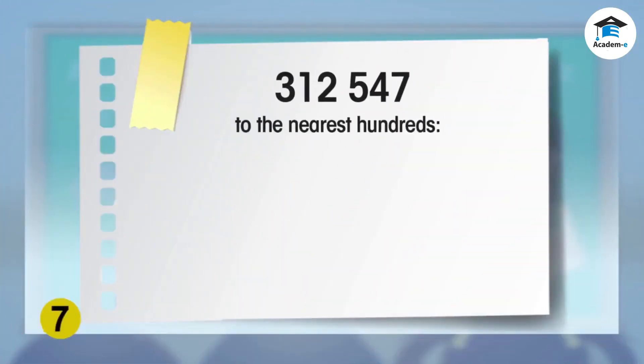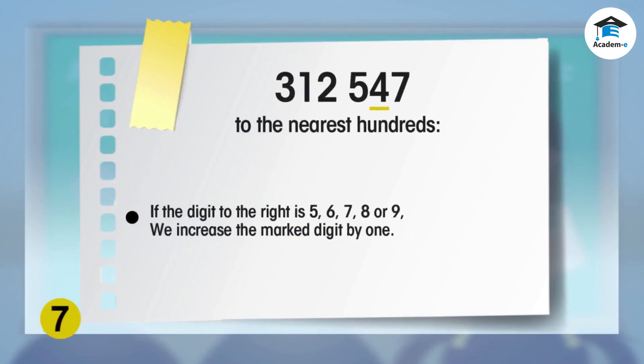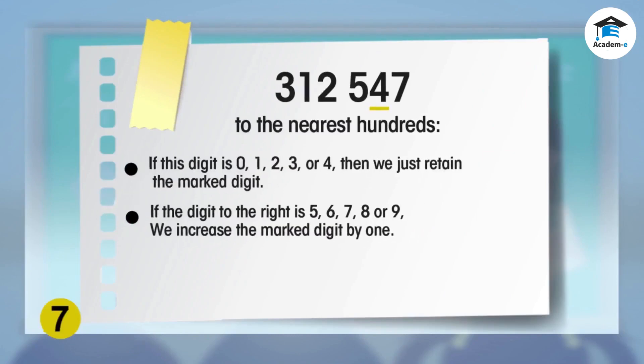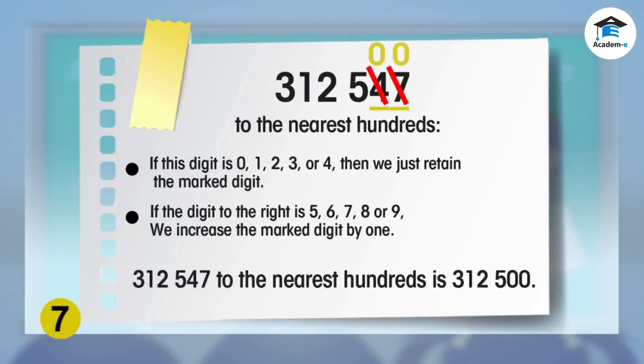To round this off to the nearest hundreds, mark the 5. Then look at the next digit to the right — it is a 4. Therefore we round down and retain the 5.